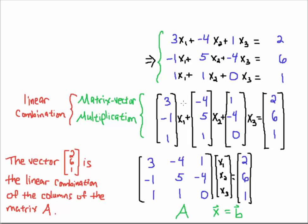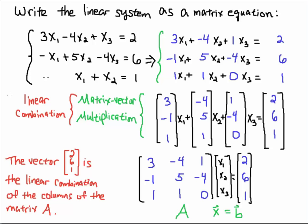This linear combination can be written as a linear system. If I take X1 and distribute it into this vector, take X2 and distribute it into the second vector, and take X3 and distribute it into the third vector, I get a linear system — and I can simplify that to a linear system you may be more familiar with. So this is how we go from a matrix equation to a linear system. In a previous video I went from the linear system to the matrix system, and here I'm trying to convince you that this system of equations is really a linear combination of the columns of matrix A.